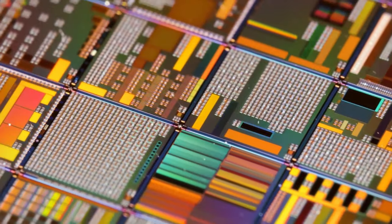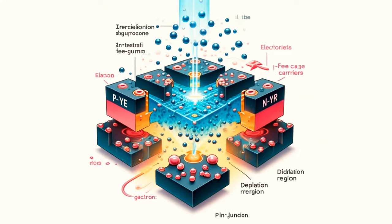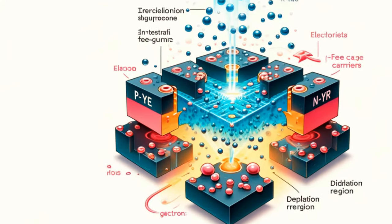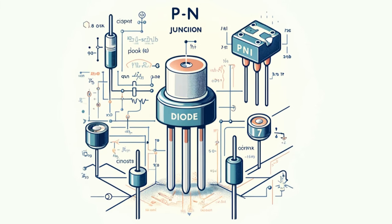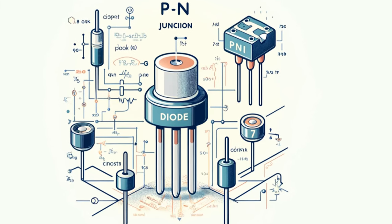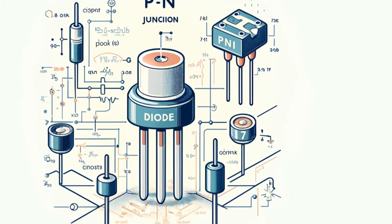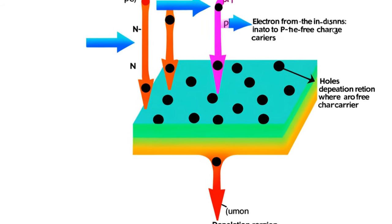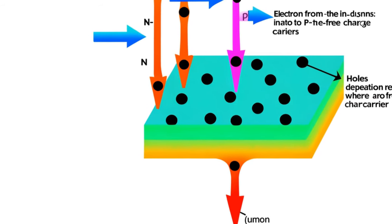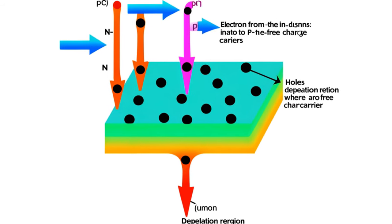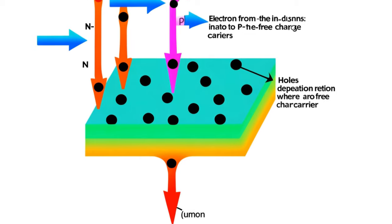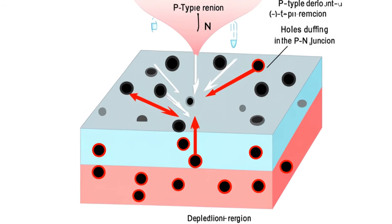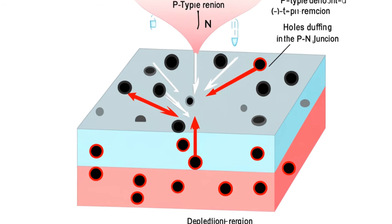When a P-type semiconductor and an N-type semiconductor are brought into contact, they form a P-N junction. This junction is the fundamental building block of many electronic devices, including diodes and transistors. At the P-N junction, electrons from the N-type region diffuse into the P-type region, while holes from the P-type region diffuse into the N-type region. This diffusion creates a region called the depletion region, where there are no free charge carriers.